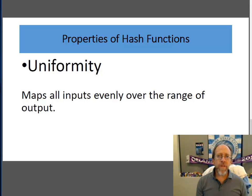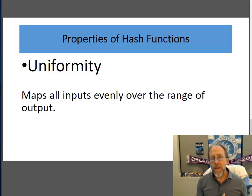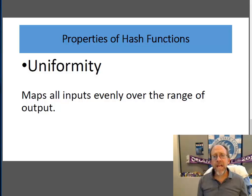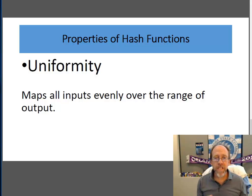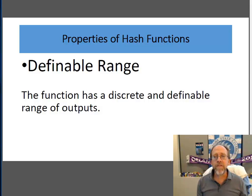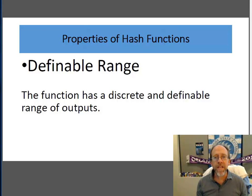Uniform — this is a good property to have, and you want the hash function to be as uniform as possible. Let's say you've got a range of potential hashed values and a large number of inputs. You would like them to be distributed uniformly. You wouldn't want ten buckets with everything in just one bucket. You want it to be uniform across all ten buckets — that's the concept of the hash table. It's also very nice if the hash function has a definable range. Not every hash function has a specifically definable range, but if you can define the range of outputs, it makes it much easier to use the hash function for practical applications.